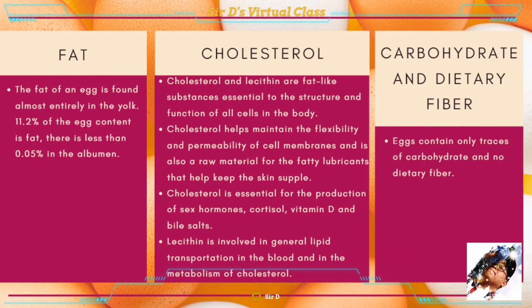Fat: the fat of an egg is found almost entirely in the yolk; there is less than 0.05 percent fat in the albumin. Cholesterol and lecithin are fat-like substances essential to the structure and function of all cells in the body. Cholesterol helps maintain the flexibility and permeability of cell membranes and is also a raw material for the fatty lubricants that keep the skin supple. Cholesterol is essential for the production of sex hormones, cortisol, vitamin D, and bile salts. Lecithin is involved in general lipid transportation in the blood and in the metabolism of cholesterol.